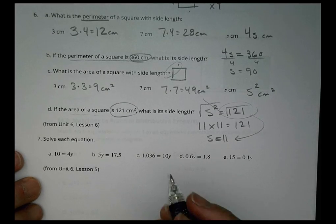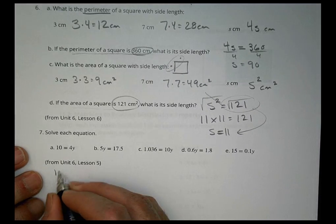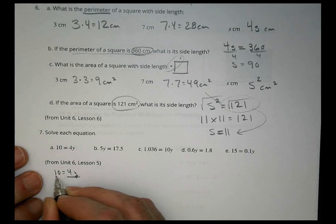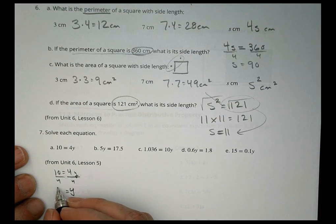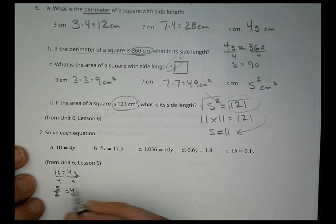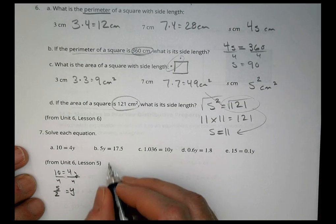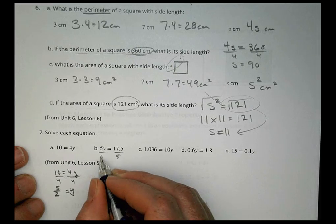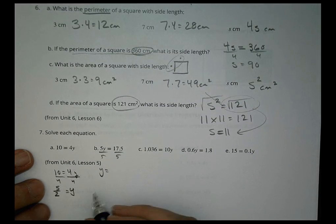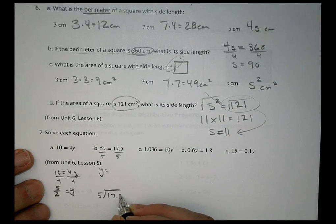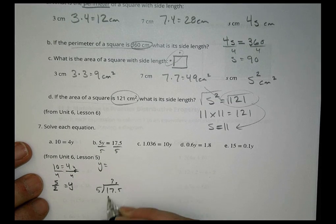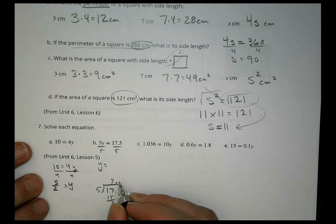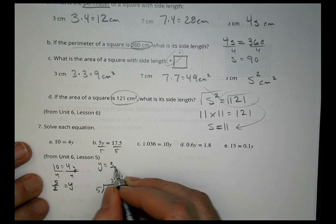Number 7, solve each equation. We have 10 equals 4y. Divide both sides by 4. So y equals 10 over 4, which reduces down to 5 over 2. This one, we're going to divide both sides by 5. So y equals, 5 goes into 17.5 three times for 15, we have 5 there, so 3.5.